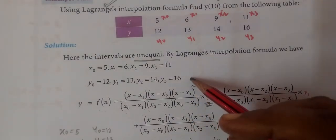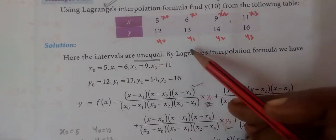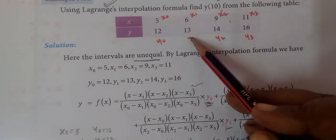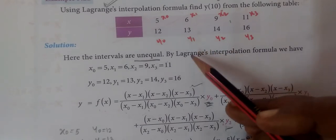Now, we see example 5.22. This is the last example in this chapter. Using Lagrange's interpolation formula, find y of 10 from the following table.